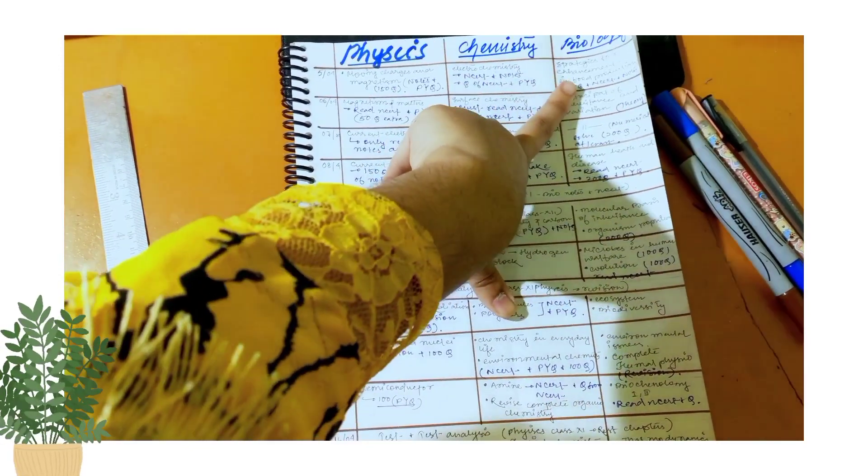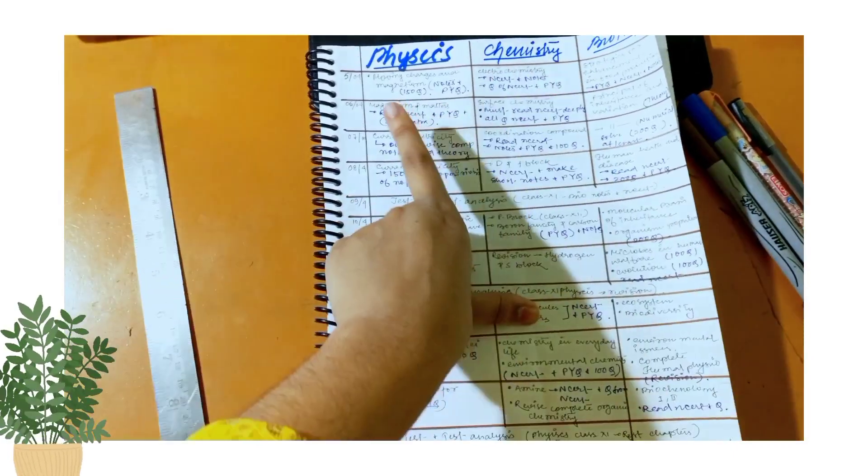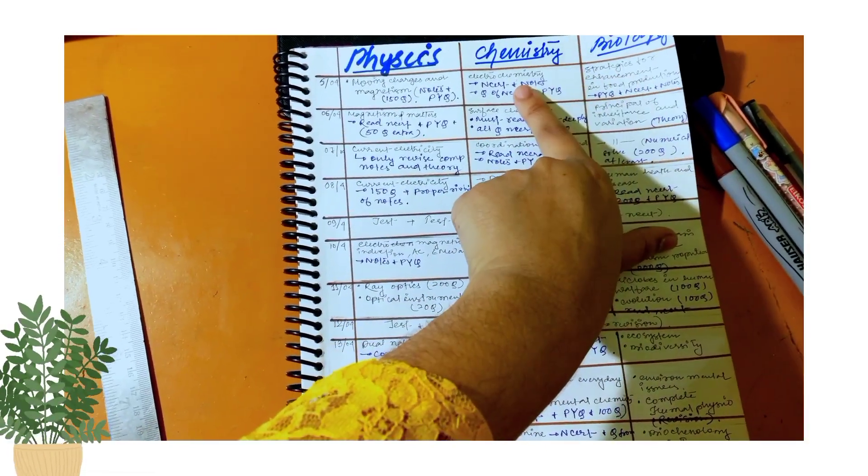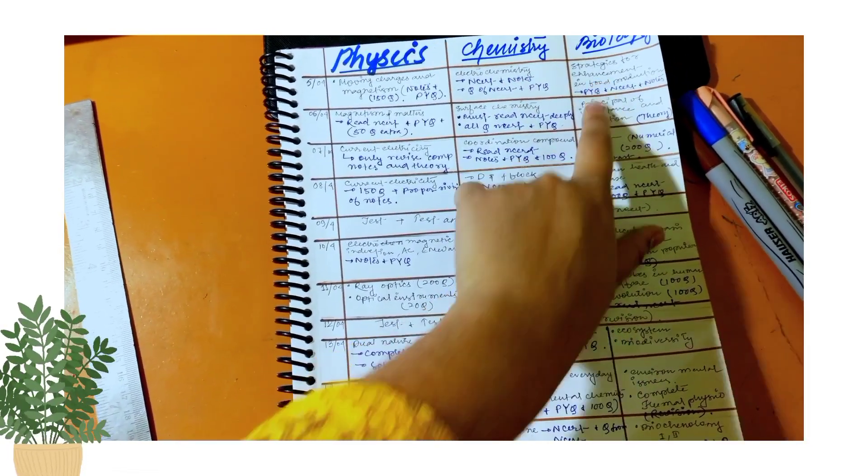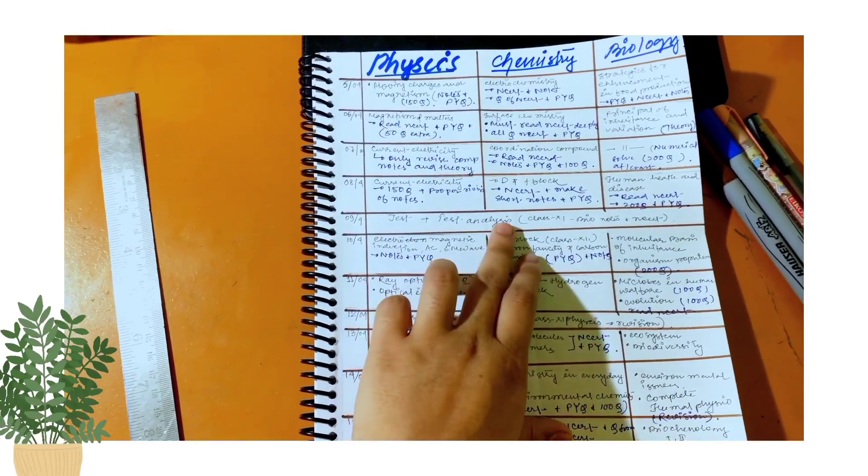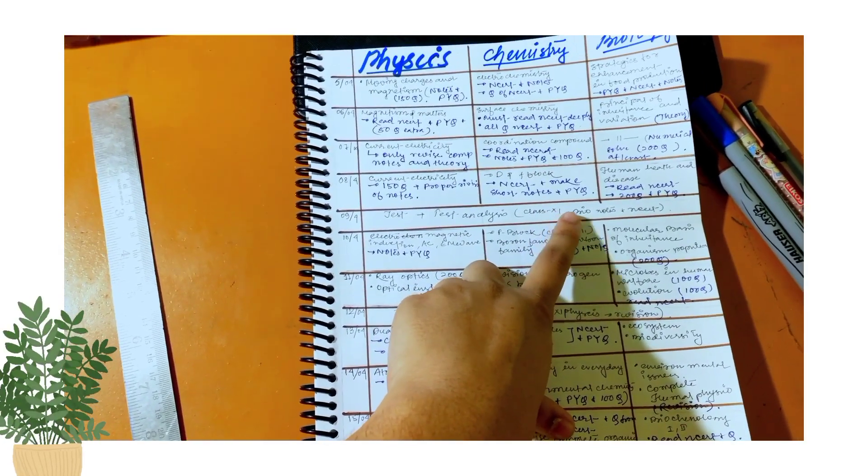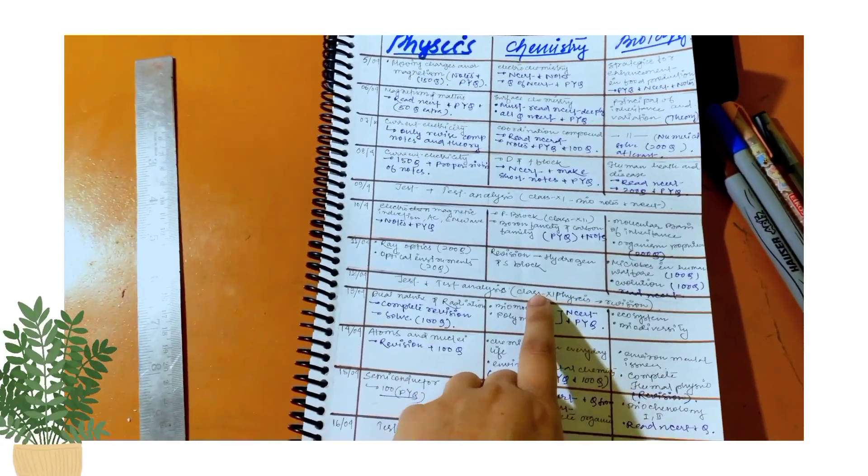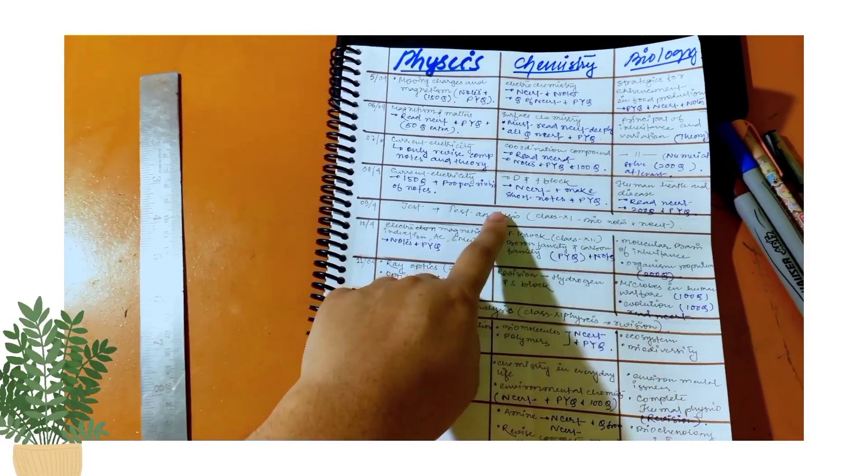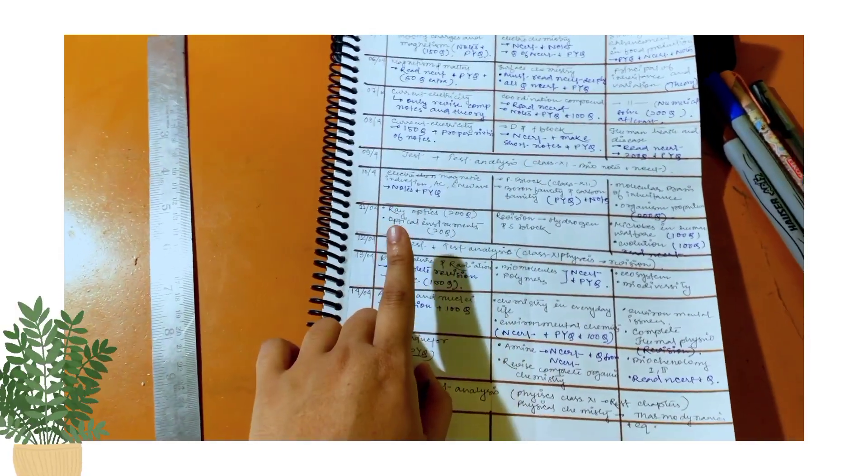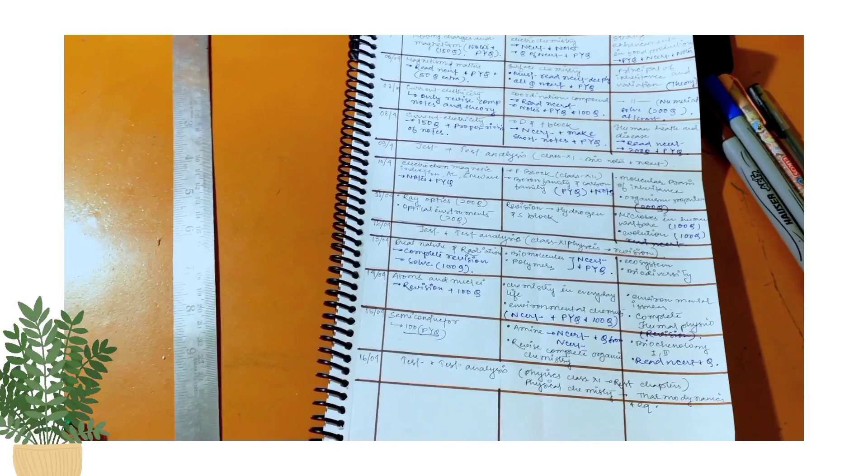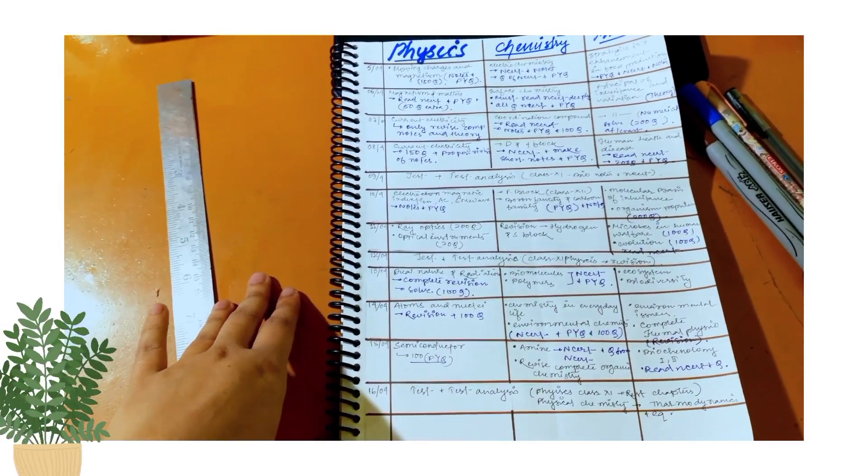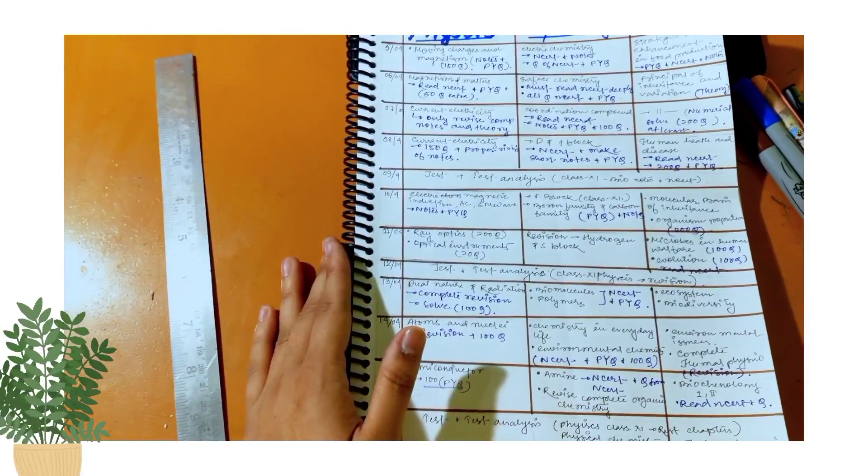So basically, today is 5th of April, so my target for today is this. I will try to cover all these chapters in 10 days, like from 5th to 16th April - many physics chapters, two chemistry and bio chapters, two chemistry and bio chapters, and if I am talking about weightage, then all of them are important.